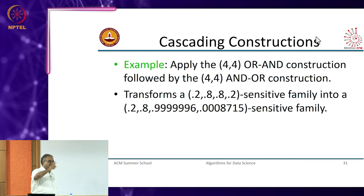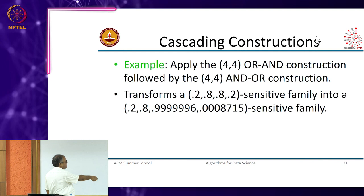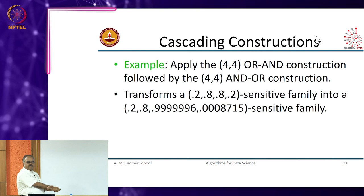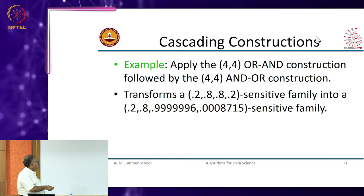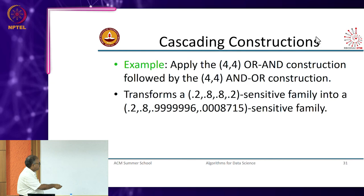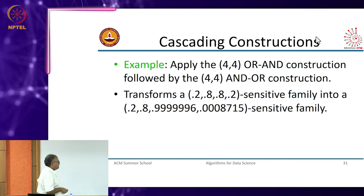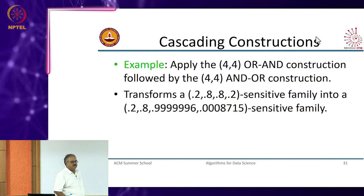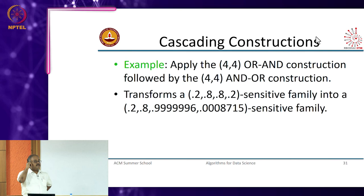Starting with the min hash family, after doing these constructions you get something that is almost like a threshold step function. If the similarity is greater than 0.8 or distance is less than 0.2, you have a high probability of having the same hash value, and above 0.8 distance the probability is almost 0 — something we can live with.